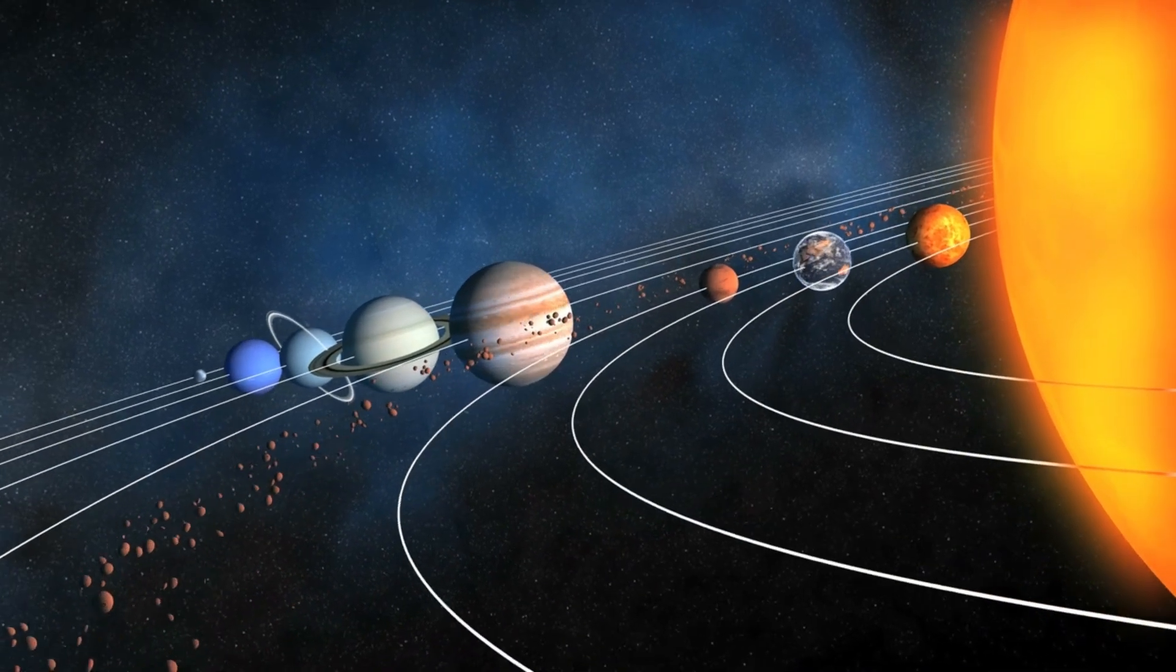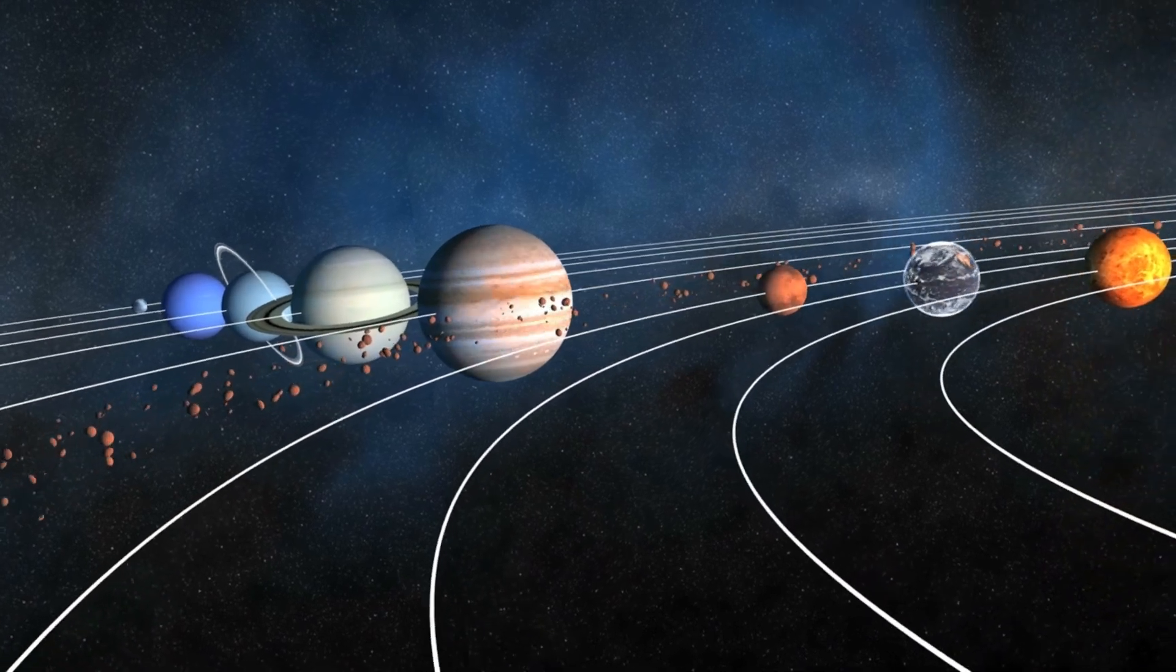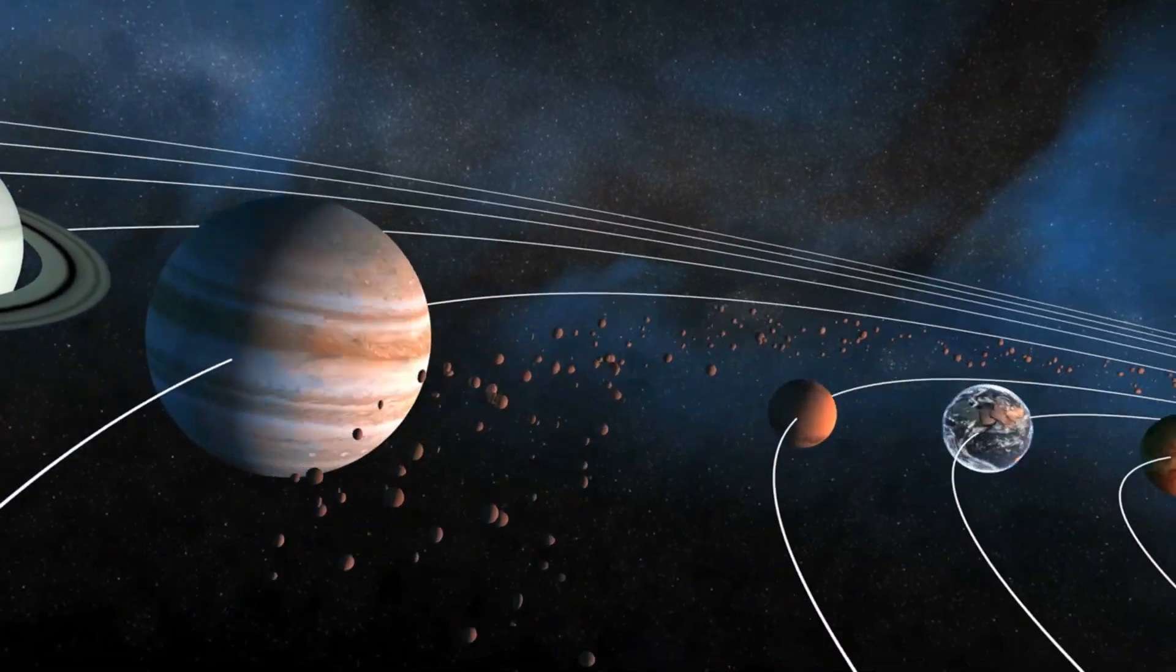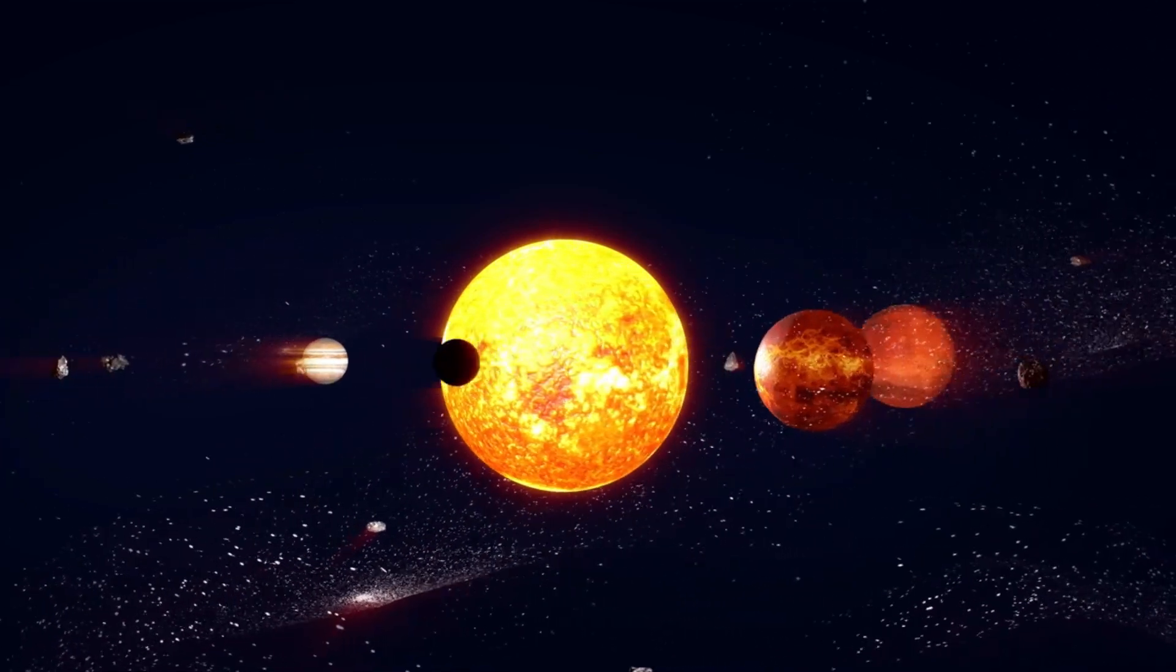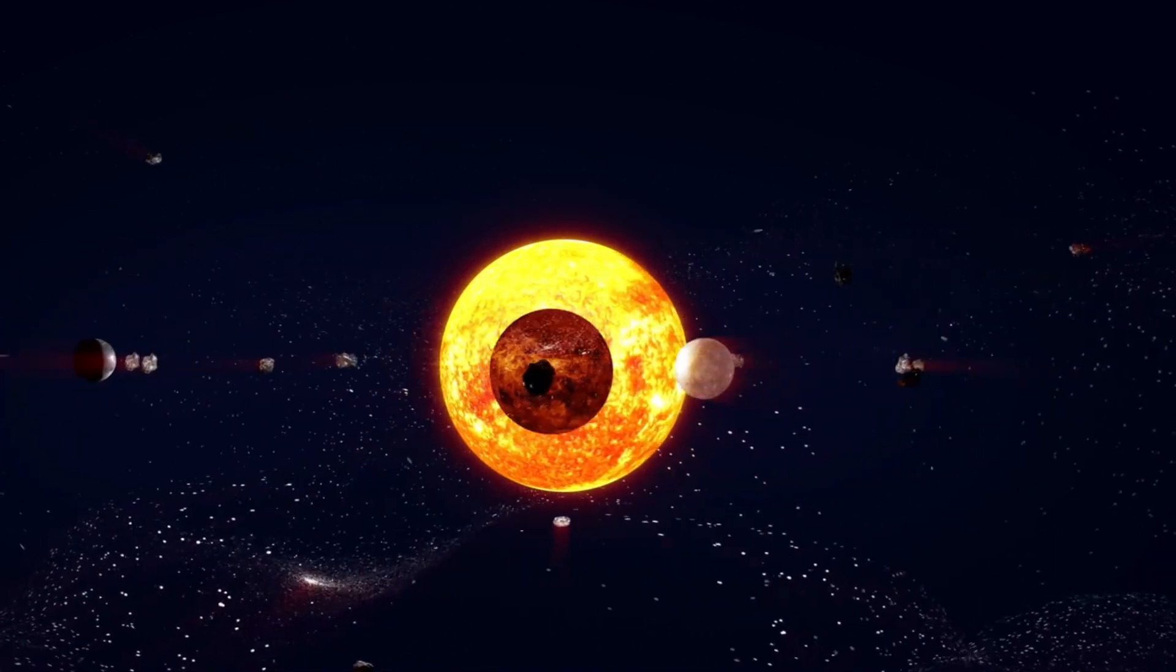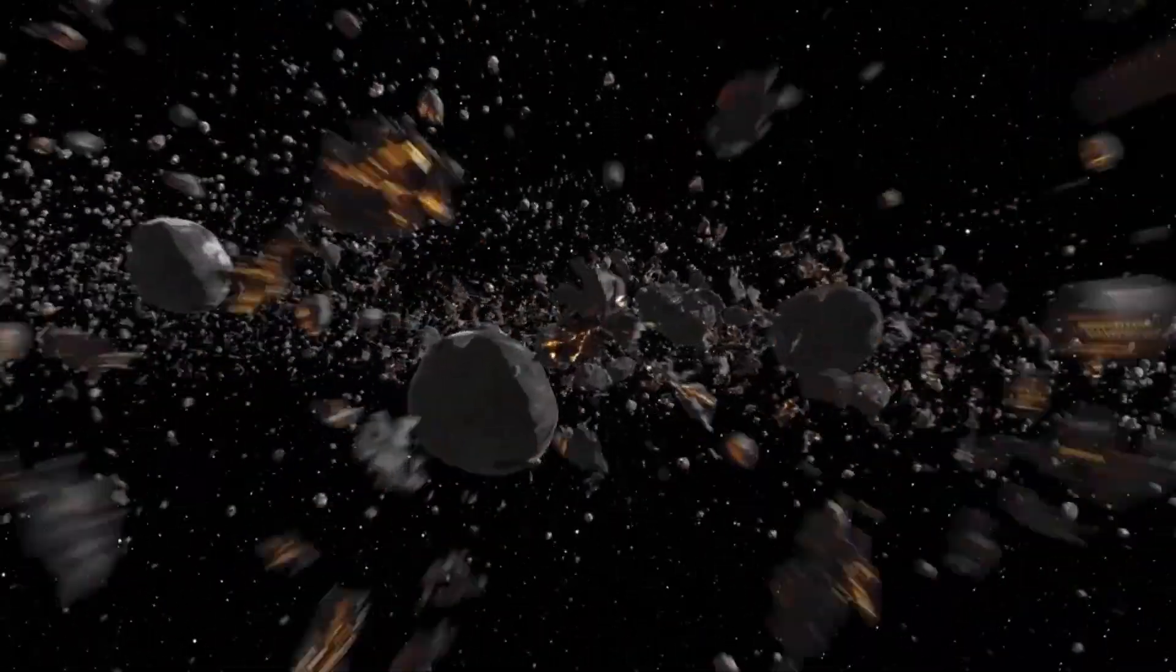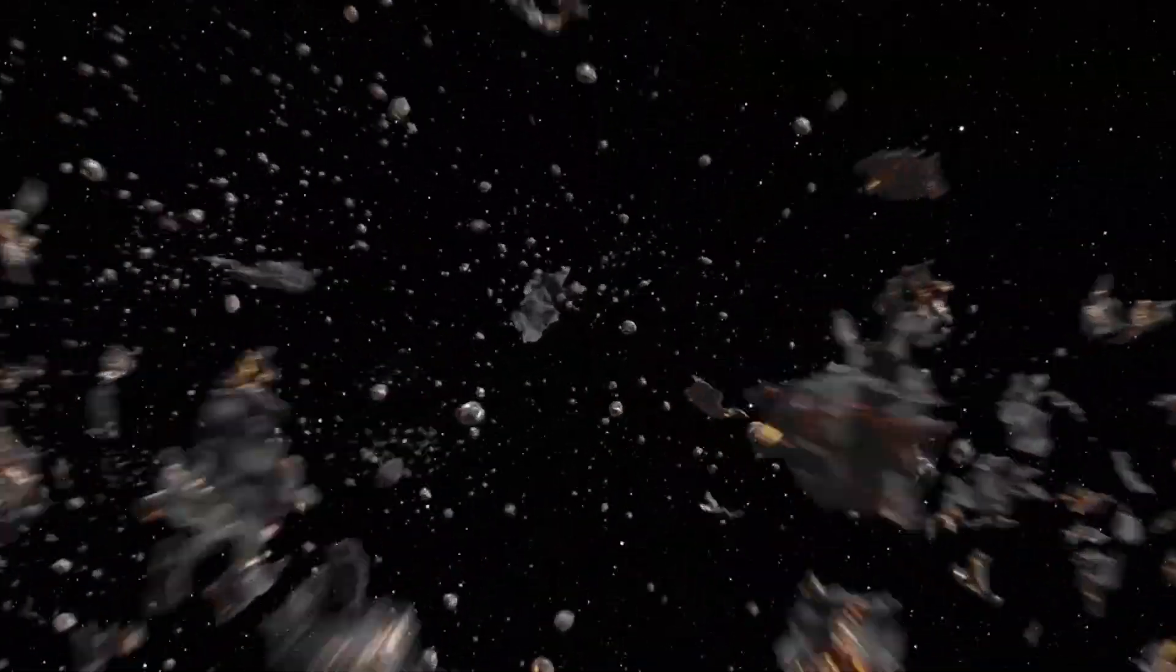But what about our sun and the solar system? The sun, along with our solar system, is located about two-thirds out from the center of the Milky Way. As the galaxies collide, the sun and its planets will be flung into a new orbit within the merged galaxy. But as far as current theories suggest, the chances of the solar system actually being destroyed are quite slim.